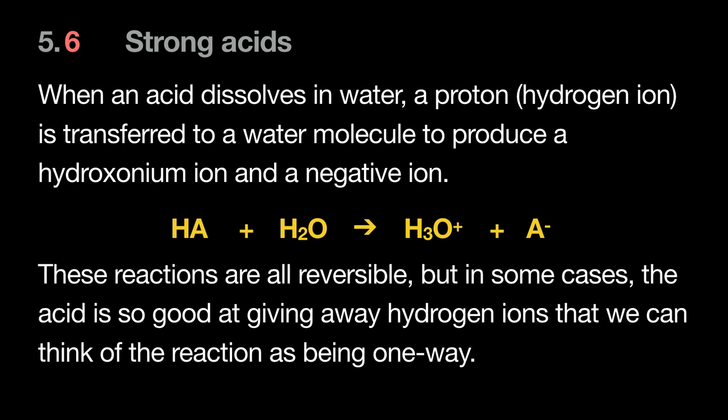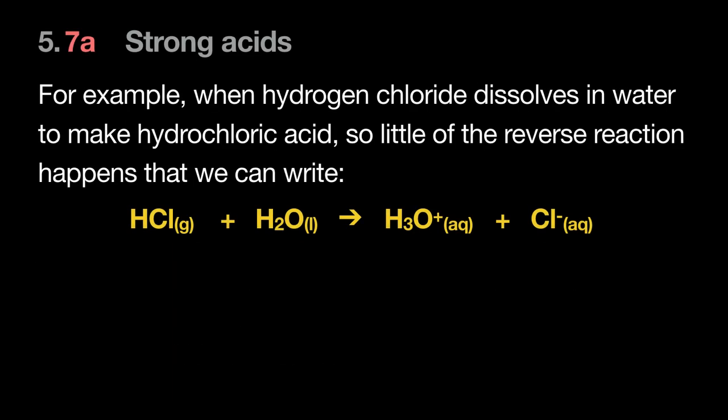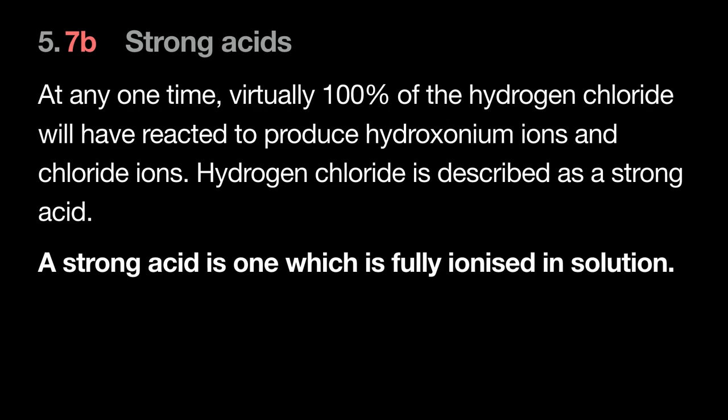Strong acids are written as essentially one-way reactions because the backward reaction is negligible. Strong acids include HCl, HNO₃, and H₂SO₄. Weak acids establish an equilibrium — they don't fully ionize. When HCl dissolves in water it makes H₃O⁺ and Cl⁻ with almost 100% conversion, so by definition a strong acid is one that is fully ionized in aqueous solution.